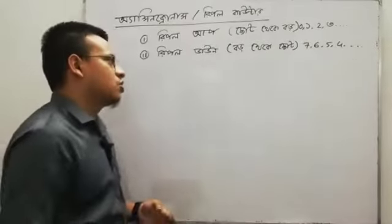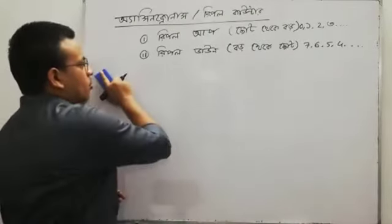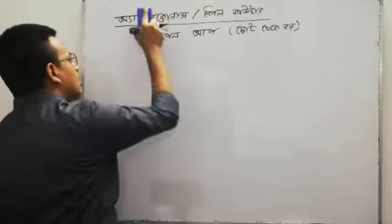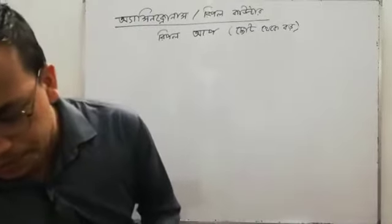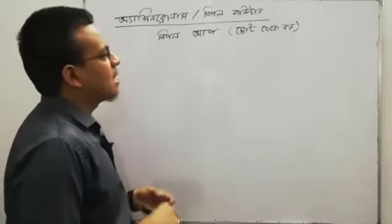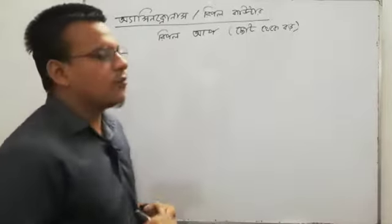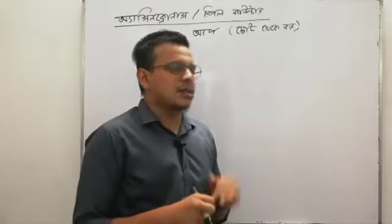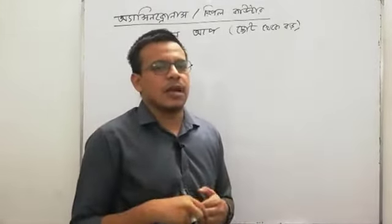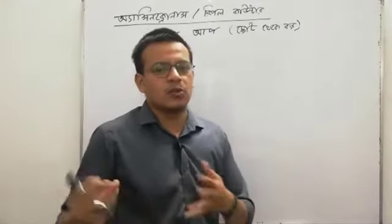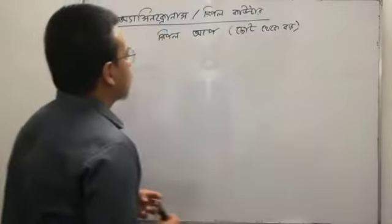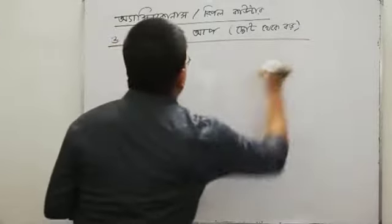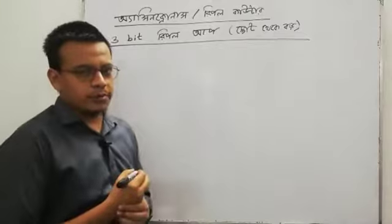Ripple down means counting from large to small. So we will first learn about ripple up counter, then ripple down counter. Ripple up counter means counting from small to large — first let's consider how many bits there are, because that many flip-flops will be there.